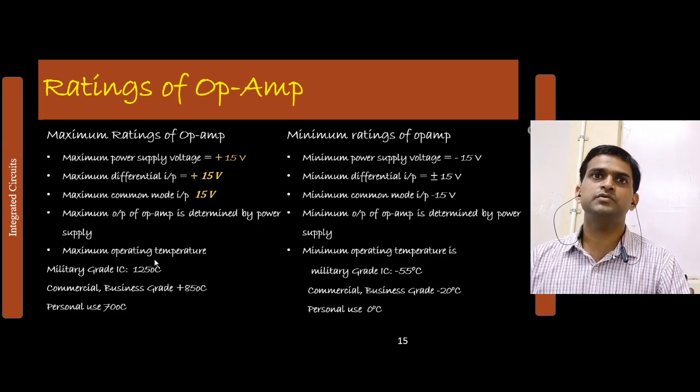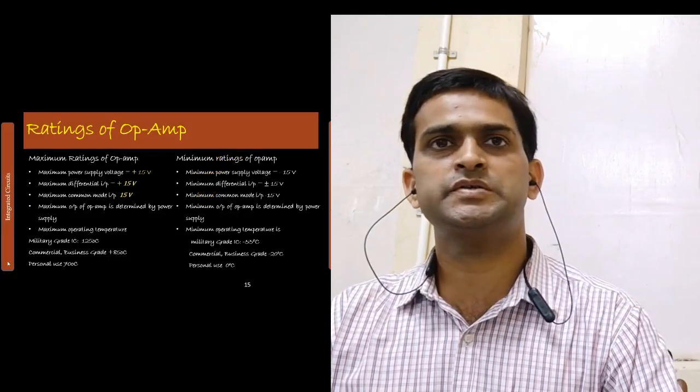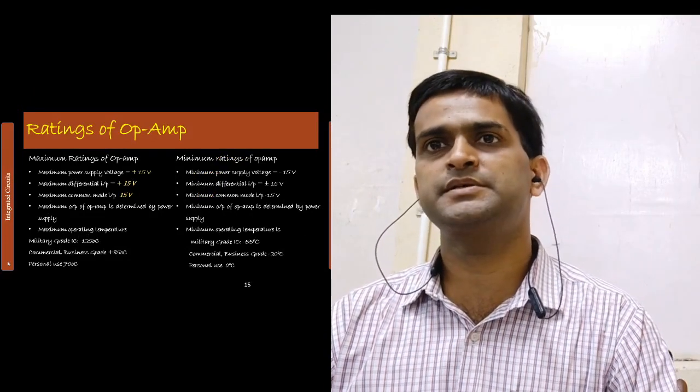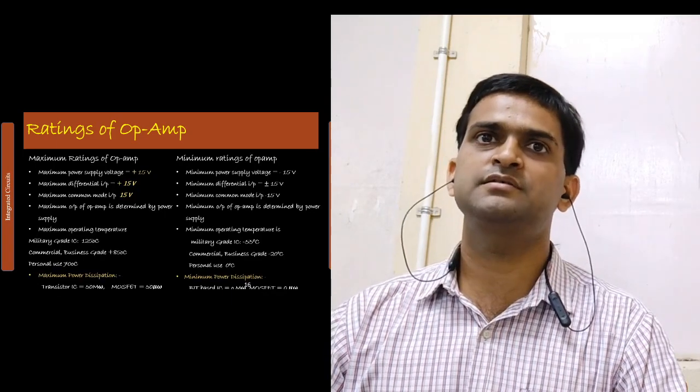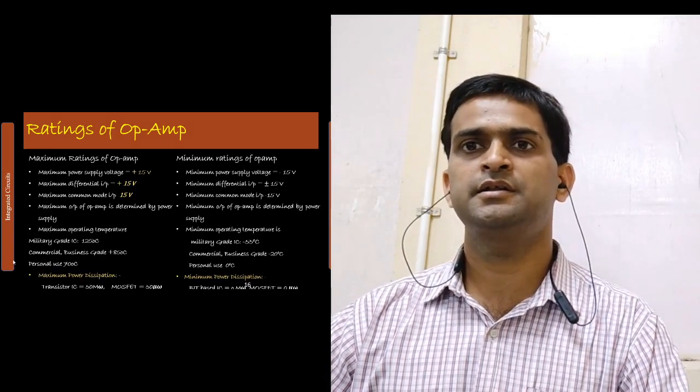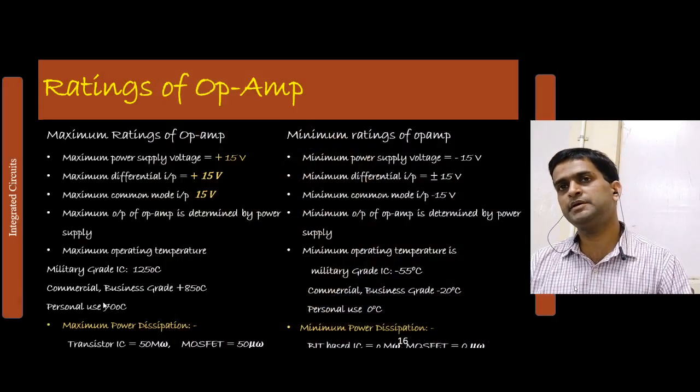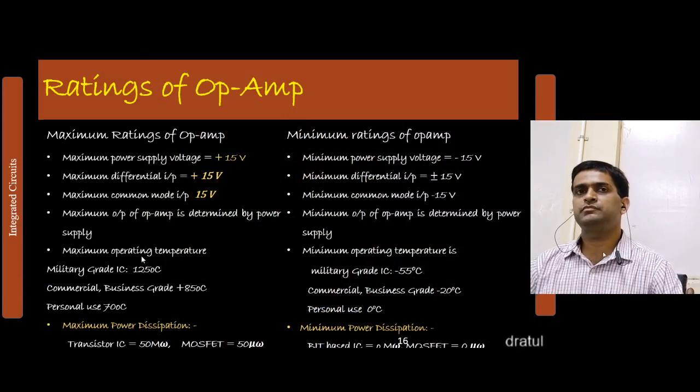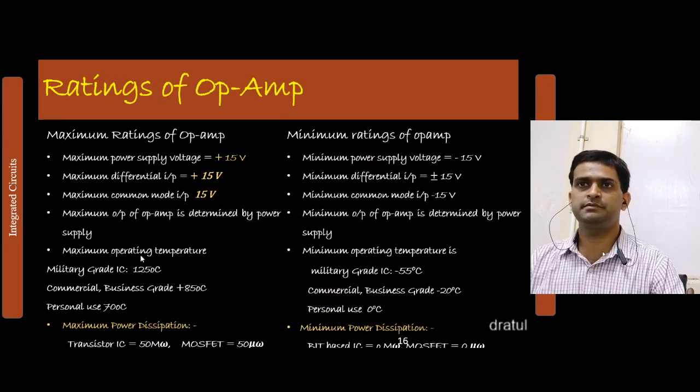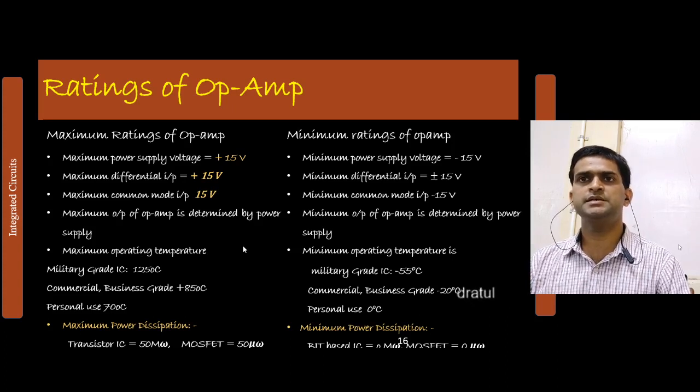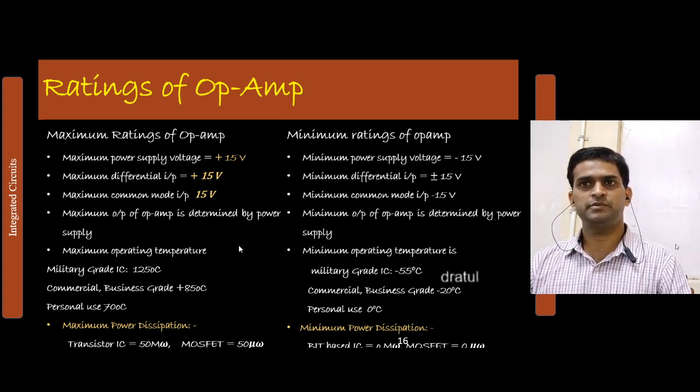There is limitation to the maximum power dissipation also. For transistor based integrated circuit, maximum power dissipation can be 50 milliwatt. And for MOSFET based integrated circuit, maximum power dissipation is 50 microwatt. And the minimum power dissipation for transistor based IC is 0 milliwatt and MOSFET based IC is also 0 microwatt.